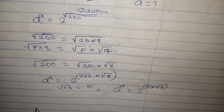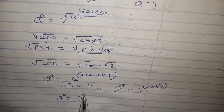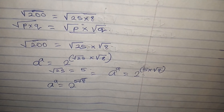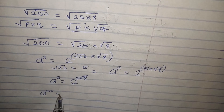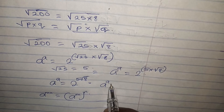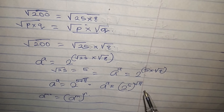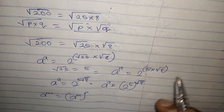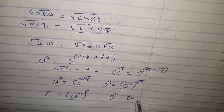So we have a to the power of a equals 2 to the power of 5 times root of 8. Recall from the rules of indices that a to the power of m times n equals a to the power of m, to the power of n. Applying this principle, we get a to the power of a equals 2 to the power of 5, all to the power of root of 8. And since 2 to the power of 5 equals 32, we have a to the power of a equals 32 to the power of root of 8.